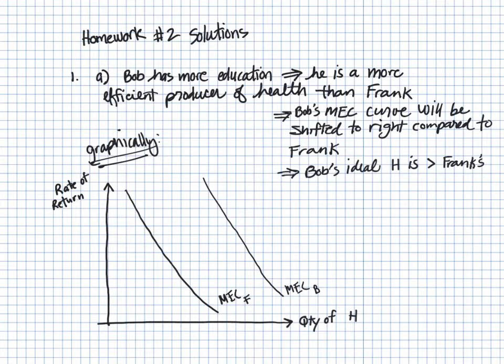So compared to Frank, Bob's MEC curve is out to the right, which means cost of capital, Bob is going to choose a greater level of health capital than Frank. To see this, let's plot a particular cost of acquiring health capital on the y-axis. Remember, both of these things we can measure in terms of percentages, so we can think about the y-axis as measuring the cost of capital and also the returns to capital.